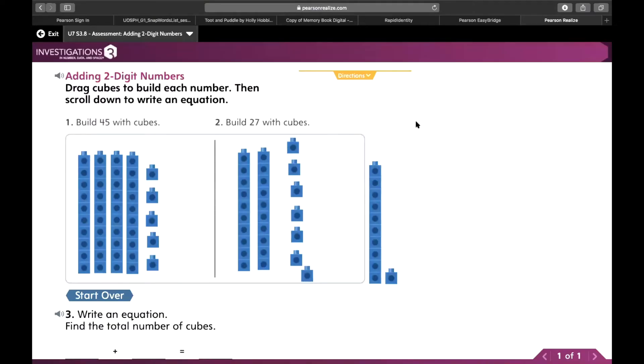All right, so for math this week, or today, we're gonna do some adding again, but this time it's a little different. So right here, it says build 45 with the cubes, and I've already built 45. We have four groups of 10. We know each of these is a group of 10. So I have one, two, three, four, or 10, 20, 30, 40. And then it says I should have five ones. So 41, 42, 43, 44, 45. So here's 45 that I've built with cubes.